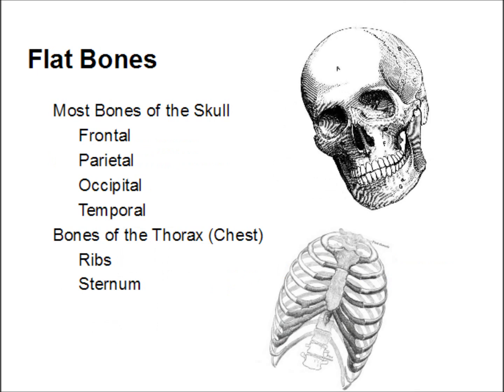Next, we have flat bones. Flat bones provide protection for our internal organs, and include the bones of the skull and the bones of the thorax, or chest.